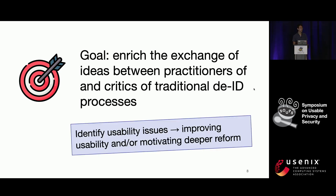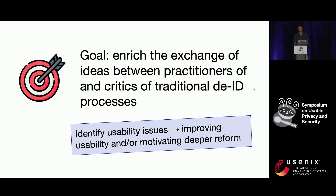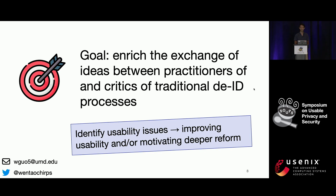For example, by identifying usability issues, we hope to both improve usability with better guidance or open source tools, as well as potentially make a case for more significant changes to the de-identification process. If some existing processes are not only lacking guarantees against re-identification, but also are frustrating to follow, then maybe it's time to cut down on privacy theater and use differential privacy or some other process instead. Thank you for your time, and I'd love to hear any thoughts or questions.